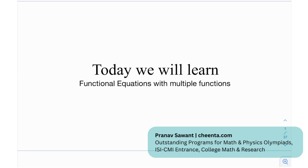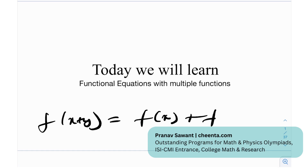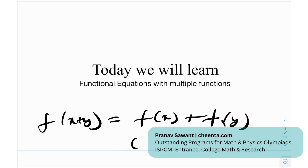Hi everyone. Today in this video we're going to be looking at a question in which we have to deal with a functional equation with multiple functions. Essentially, till now we've only been dealing with a single function. So for example, f of x plus y is equal to f of x plus f of y. This is obviously the additive Cauchy's functional equation. The solution is f of x equals a linear function ax plus b, but linear functions are additive. Essentially this is only a functional equation in one function.